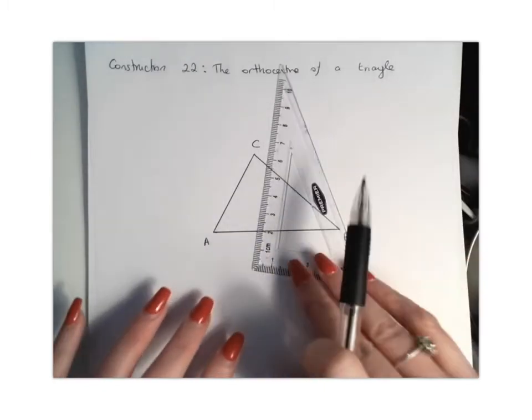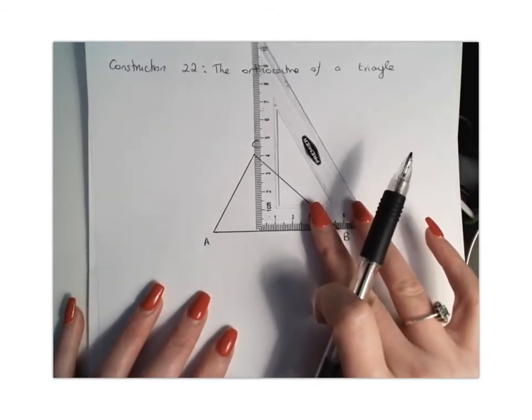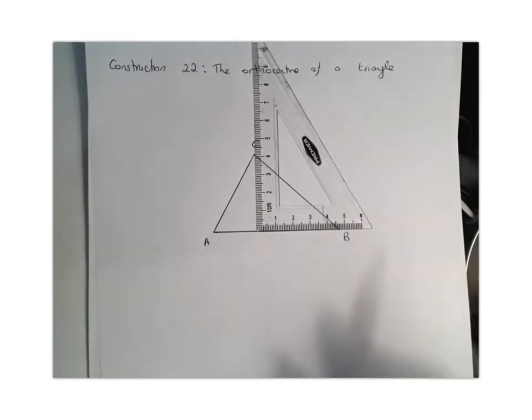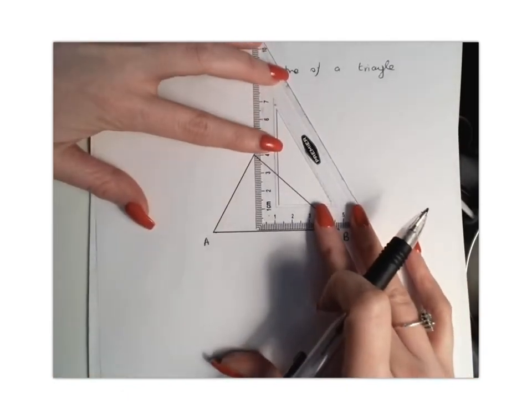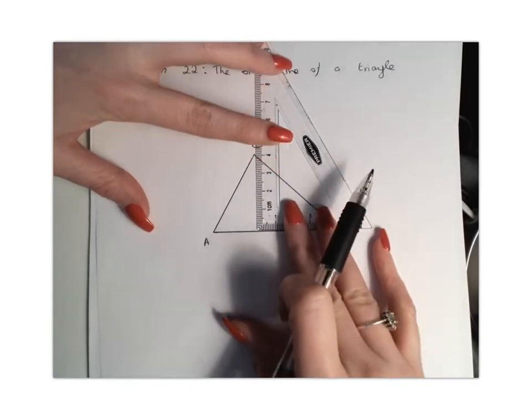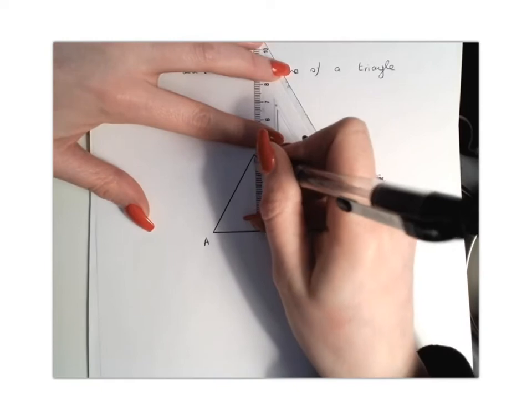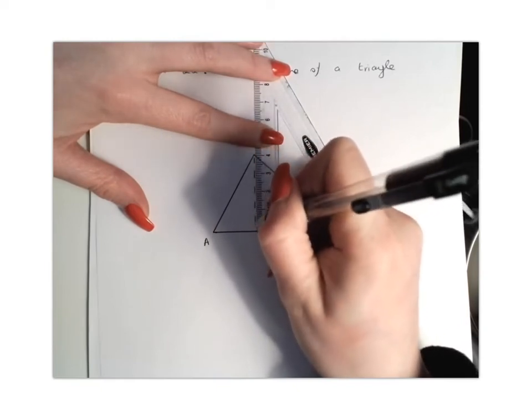What we want to do is find our 90 degree line, so a line perpendicular to the line AB that goes through the point C. We're going to line up our set square so that it's in line with that line AB and creating that 90 degree angle and going through our point C, the opposite side.